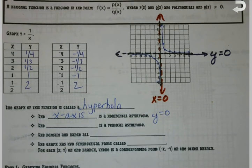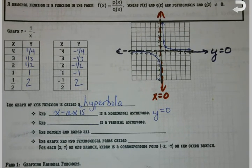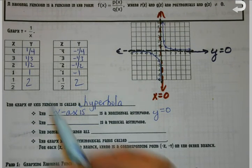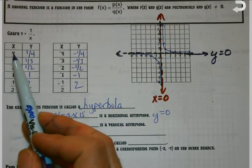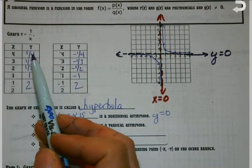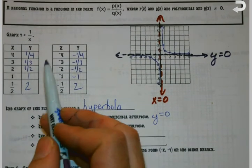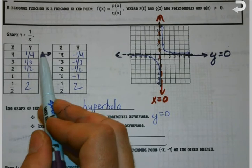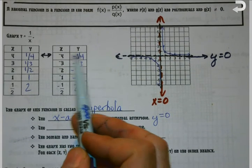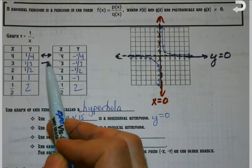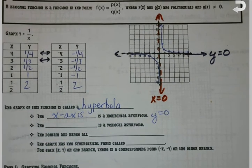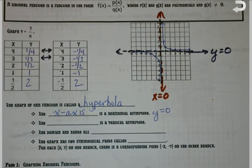I've gone ahead and filled in this chart because I want you to notice a pattern that develops. When you look at your x and y values, 4 and 1 fourth, 3 and 1 third, look at its counterpart with a negative x value. Same y value, but negative. So I get this kind of mirror image.